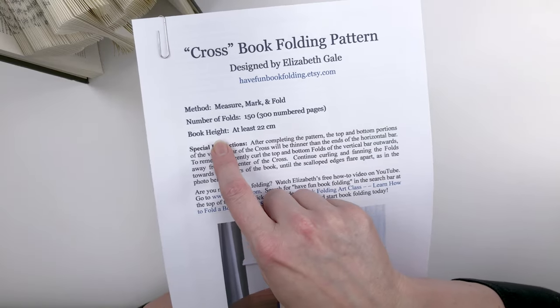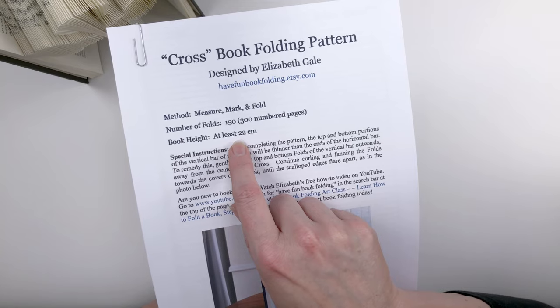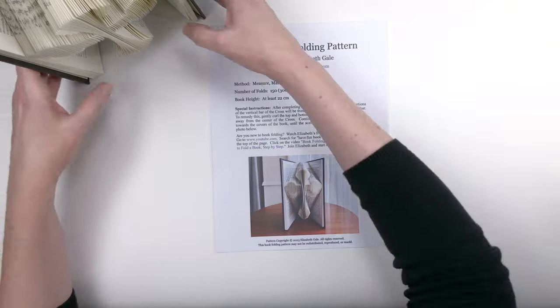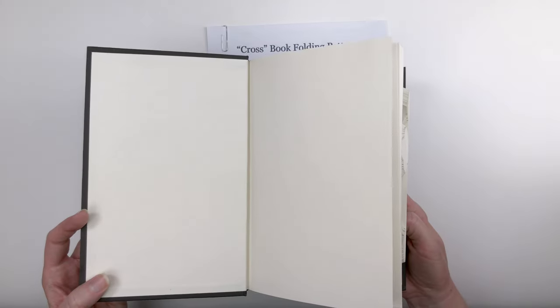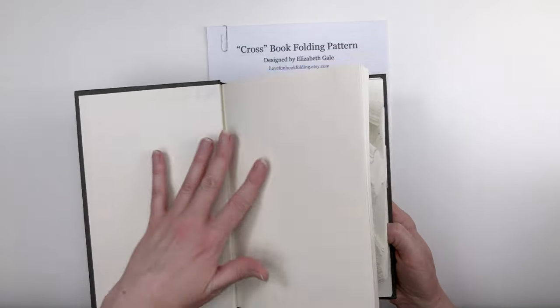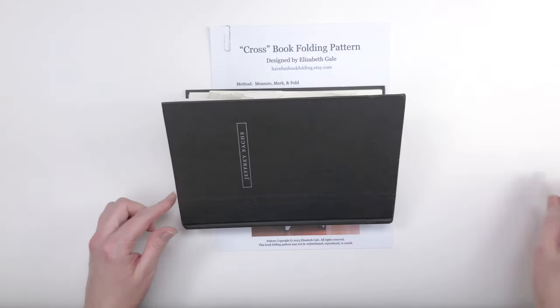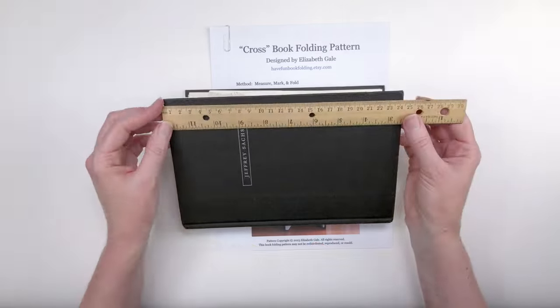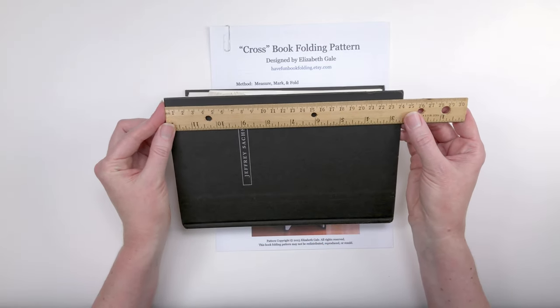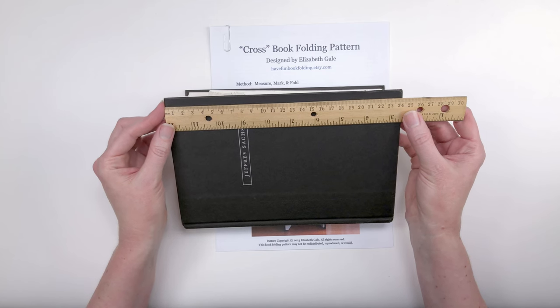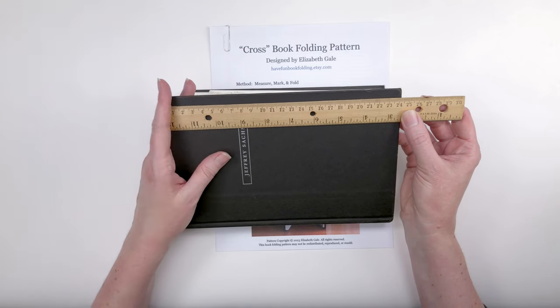If we look at the next line, you'll see the height of the book you'll need is at least 22 centimeters. And when I say 22 centimeters, I'm talking about the cover of a book, not the pages inside. A book's pages are always shorter than its covers. You can use a book that's taller than 22 centimeters. This book that I folded is, let's see, it's a little over 24 centimeters. So if your book is over 22 centimeters tall, that's fine. The cross will still look good.